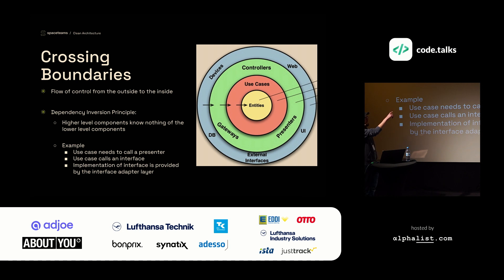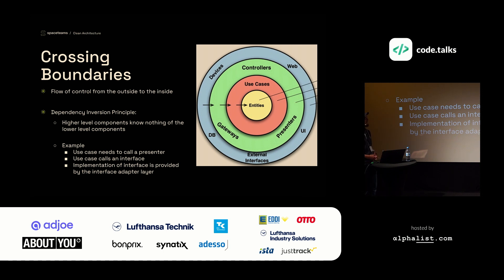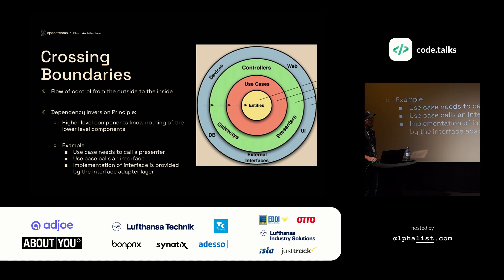As you may have noticed, we have these arrows here pointing from the outside to the inside, because the flow of control in this architecture is from the outside to the inside. This means our high-level components know nothing about our lower-level components — for example, our entities know nothing about our use cases. Now you may ask: what if a use case needs to call a presenter? We can't do this directly, so instead our use case would call an interface, and the interface implementation is provided by the interface adapter layer. This is called the dependency inversion principle.